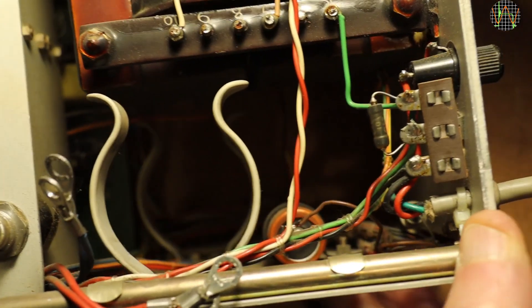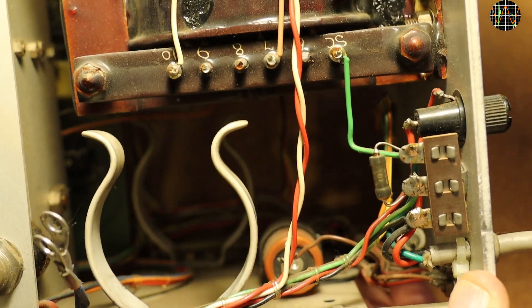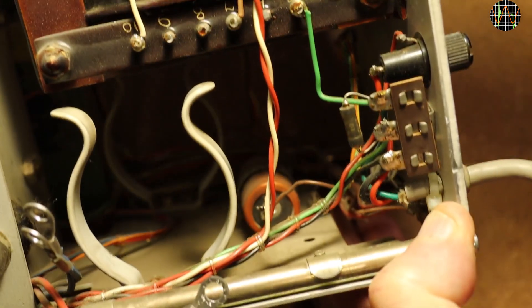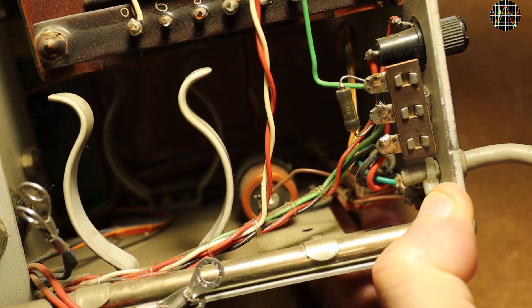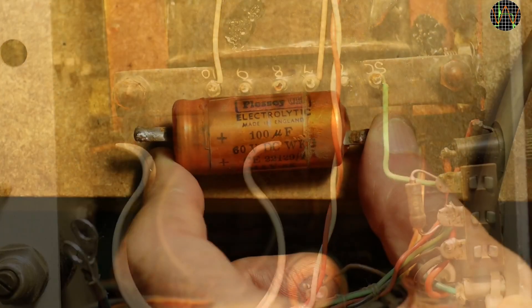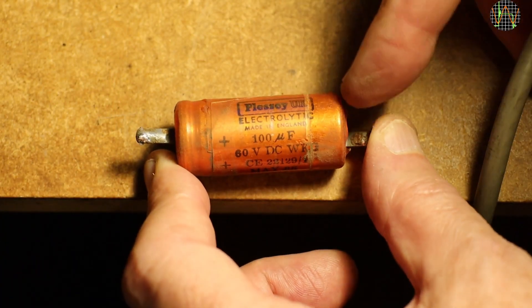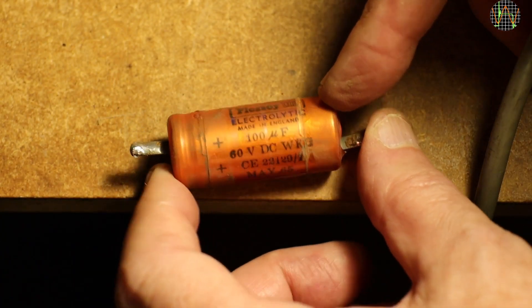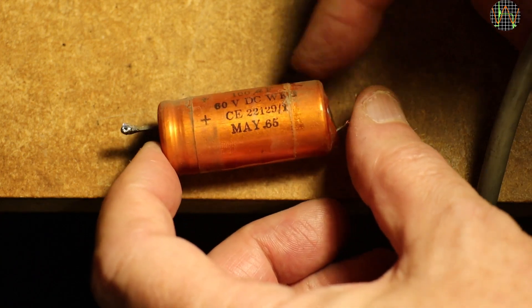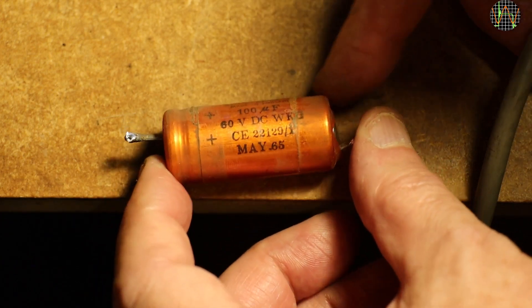While the big one is out, I decided to replace the one remaining original electrolytic cap because it is really hard to get to. And it turned out to be another of the 100μF 60V caps from 1965 which I replaced with the 100μF 100V type.